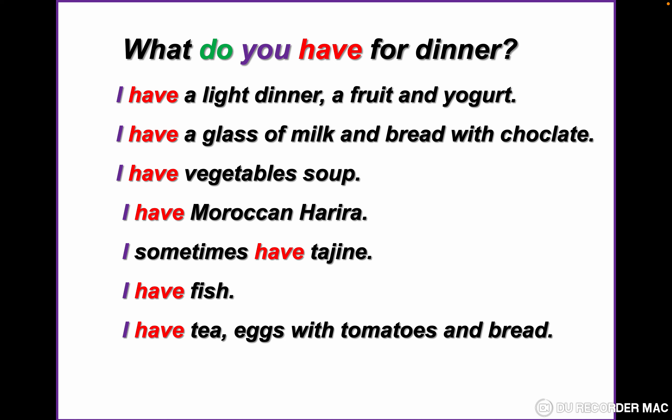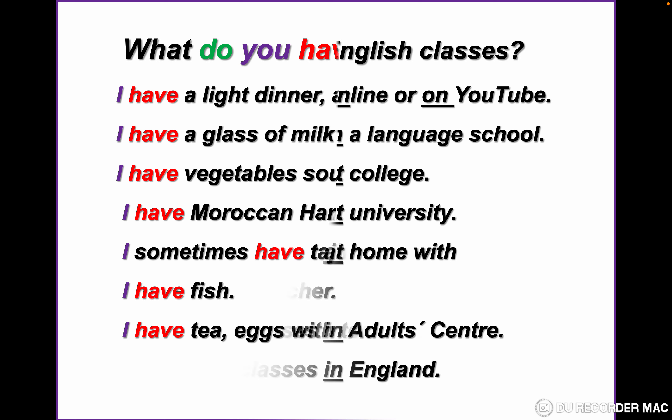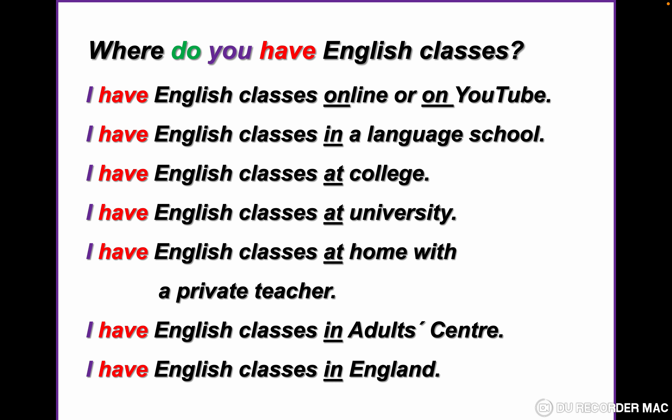I have Moroccan Harira — that's a Moroccan soup. I sometimes have tagine. I have fish. I have tea, eggs with tomatoes and bread. Let's go to the next example. In this example we changed the WH word.